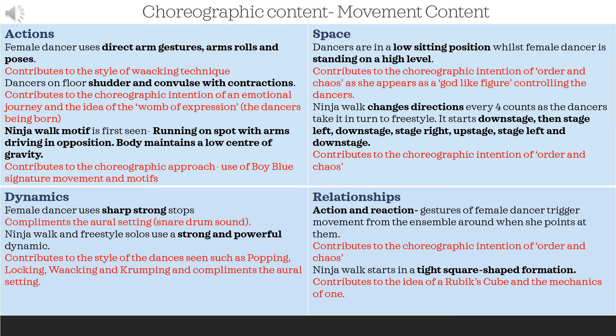Looking at relationships, I've picked out action and reaction: gestures of the female dancer trigger movement from the ensemble when she points at them, contributing to the idea of order and chaos. The ninja walk starts in a tight square-shaped formation, which contributes to the idea of a Rubik's Cube and the mechanics of one — Kenrick talks about this in his interview. Please go back to the section, look at the examples I've picked out, pick out some of your own, and fill in that section of your booklet.